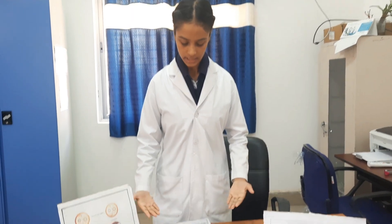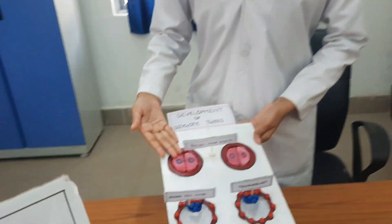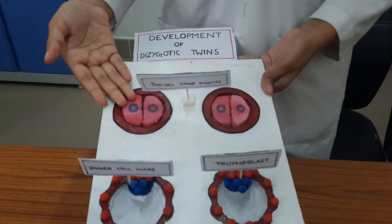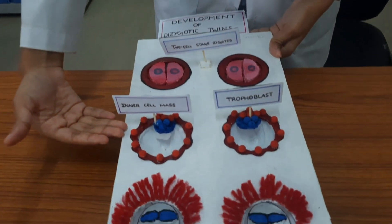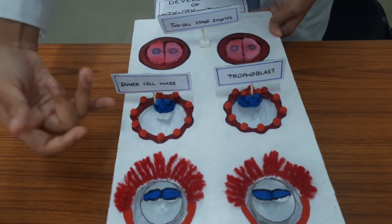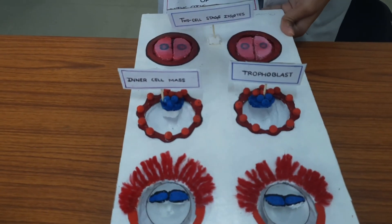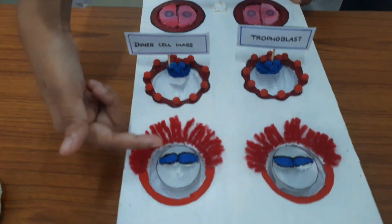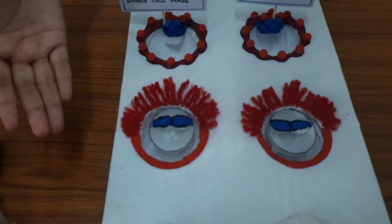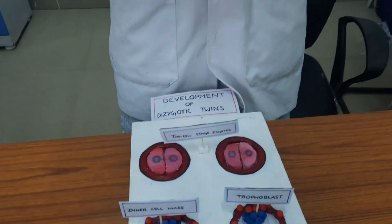In this model, we can see the two-cell stage here, which is formed after the fertilization. This part here shows the development of the inner cell mass — the blue area — and the trophoblast, which is the red area outside. After that, the chorion, the amniotic cavity, the yolk sac — everything we can see here. In Dizygotic Twins, each of the zygotes takes a different place in the uterus, implants itself, and gives rise to two different zygotes with its own placenta, amniotic cavity, chorion, and everything.